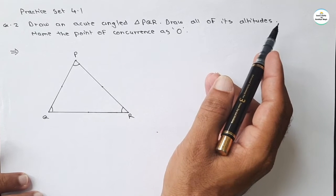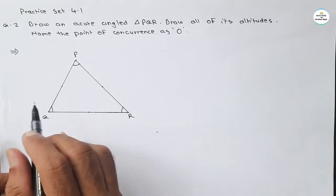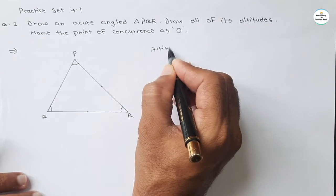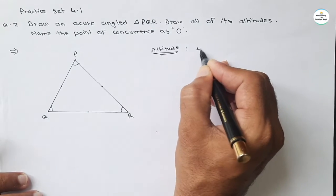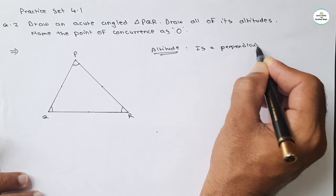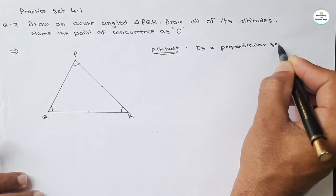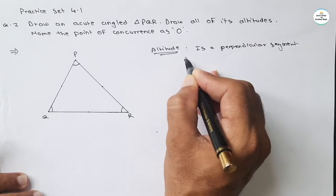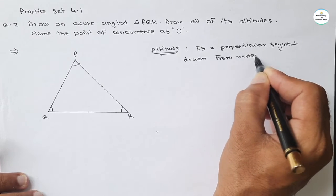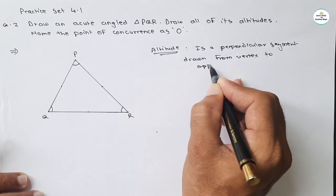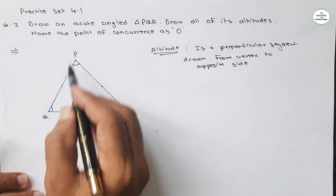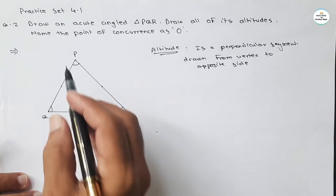Now draw all its altitudes. We know what an altitude is. An altitude is a perpendicular segment drawn from a vertex to the opposite side. There are three vertices — P, Q, and R — so we will draw three altitudes.